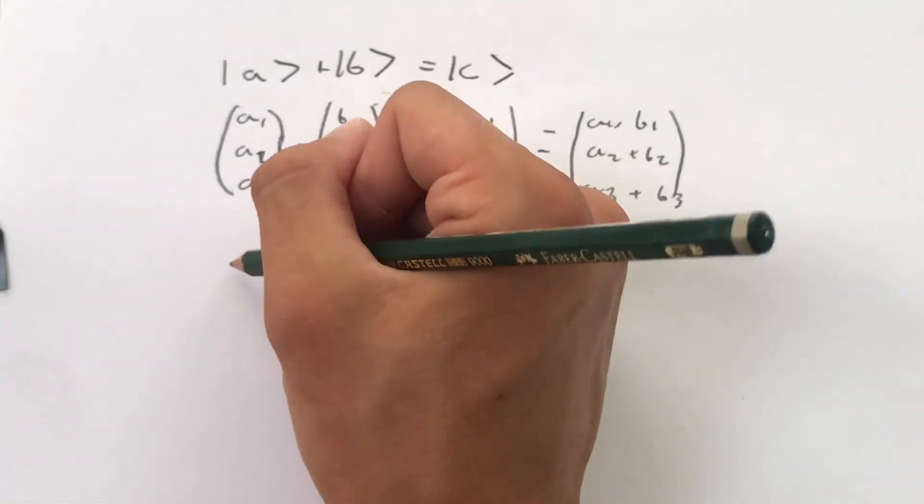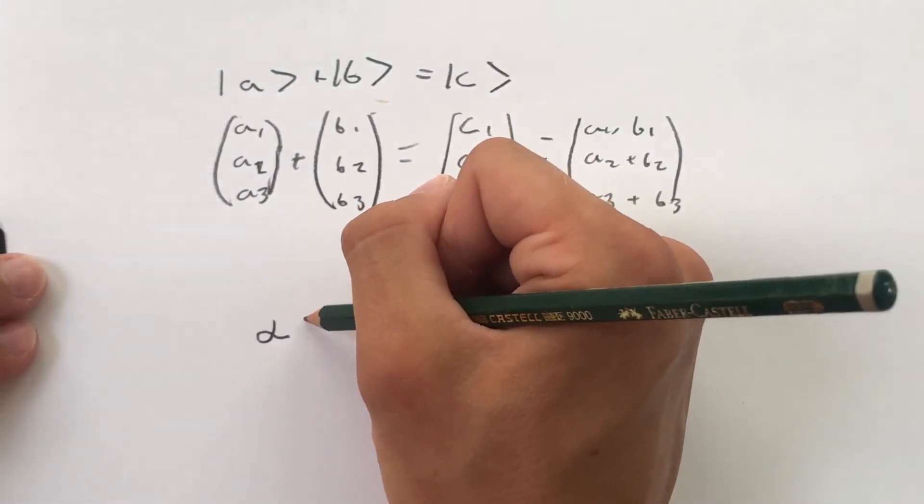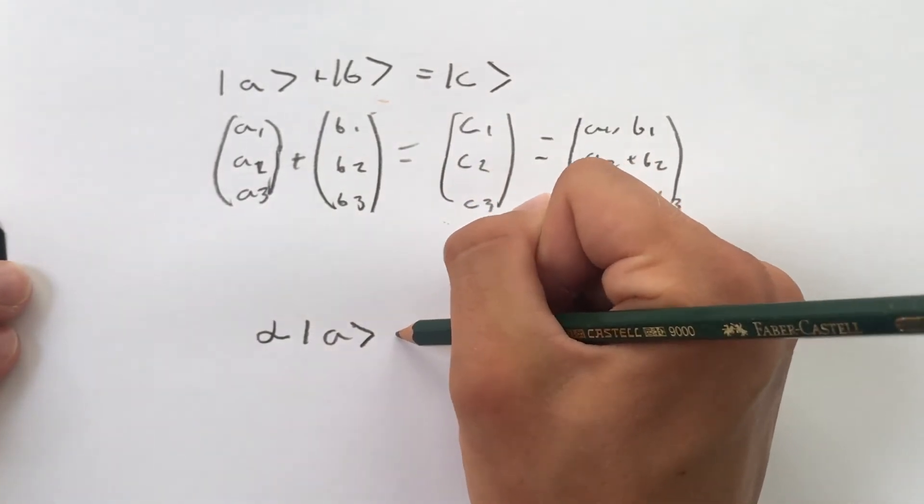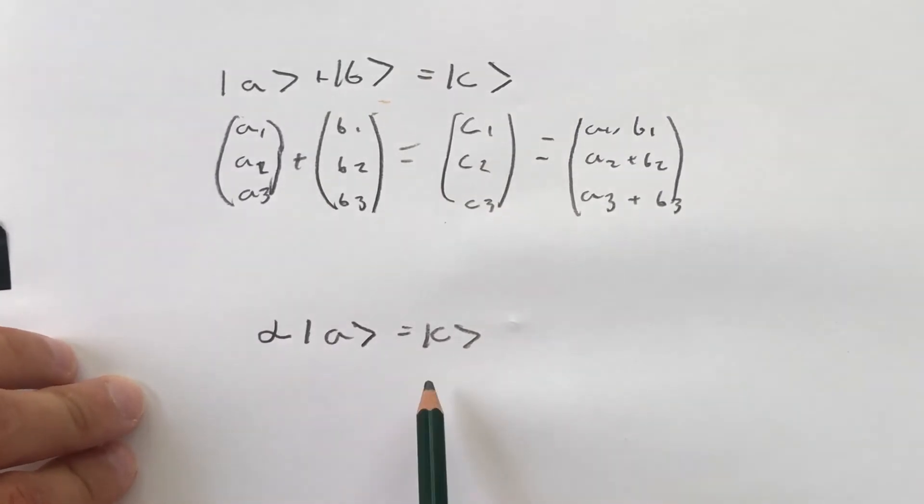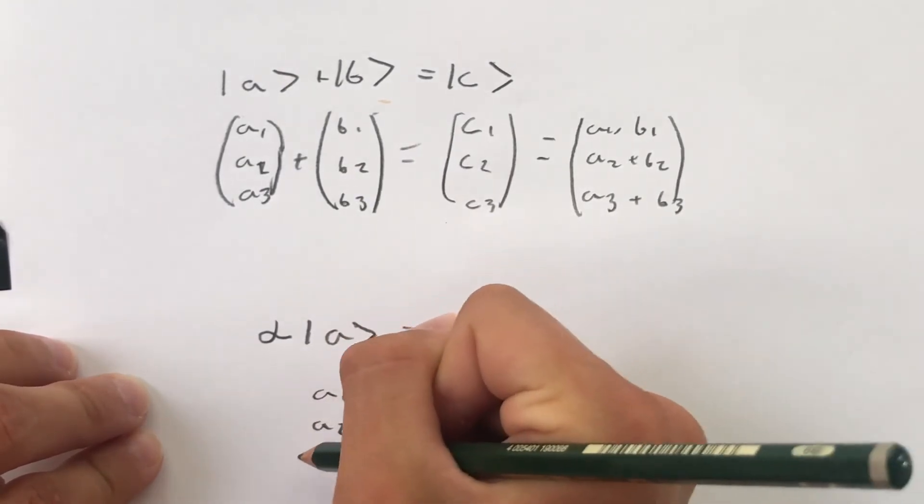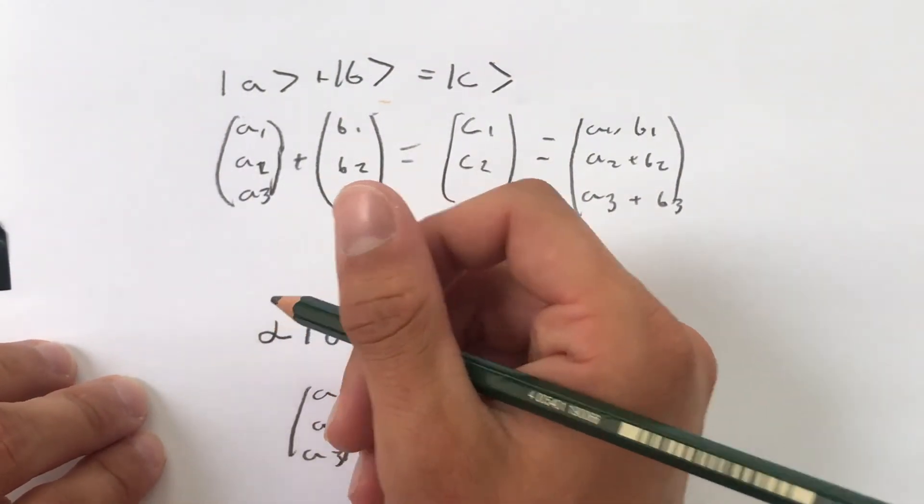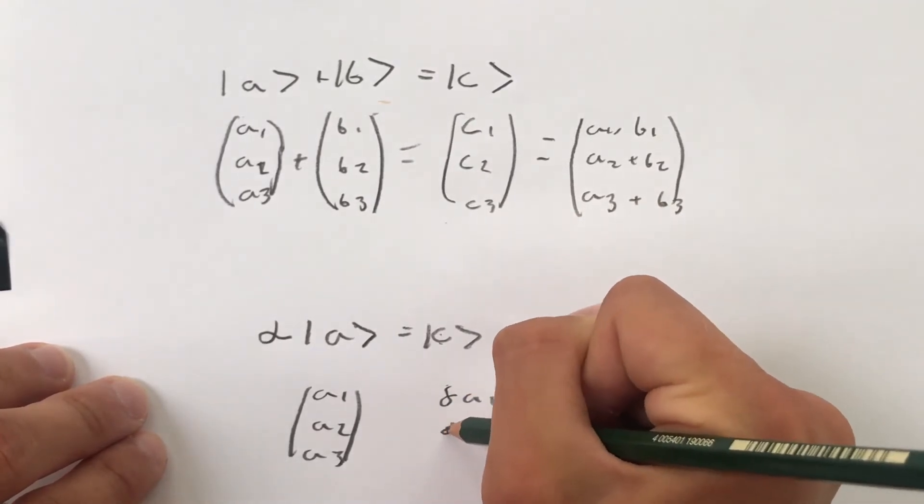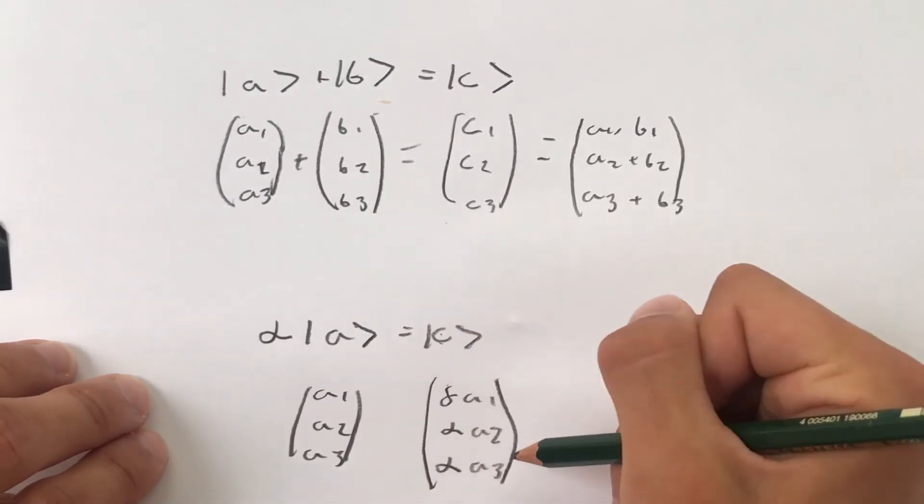So if you have a number, for example alpha, this could be a complex number, it does not need to be a complex number, and you put it in front of a ket vector, you will simply just get a new ket vector. So that equals ket vector c again. And how you derive this equation is pretty simple as well. You know that this equals a1, a2, a3 multiplied by alpha, which then essentially is this ket vector c, which is alpha a1, alpha a2, alpha a3 multiplied all together. So that makes a new ket vector.